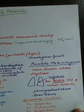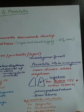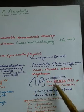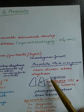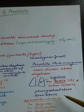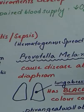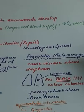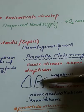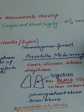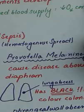Whereas Prevotella melanogenica causes disease above the diaphragm. What is present above the diaphragm — it will affect the lungs, causing lung abscess, and it can cause pharyngeal abscess and even brain abscess. An important feature to remember is that the dead necrotic tissue or abscess formed in the lung, when cultured, will show black color colonies.